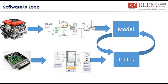Next we have Software In-Loop. Here I have a plant model — the engine — and a controller. I model the engine in the simulation software. I also model the controller in Simulink or any other simulation software, and then I generate a C file out of it. I put them together in a loop, and that becomes my Software In-Loop. The engine is modeled in simulation software, and the C file generated from the controller model is put in loop with the engine model.